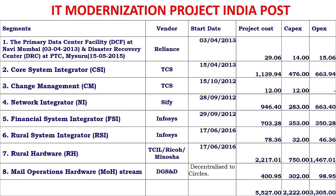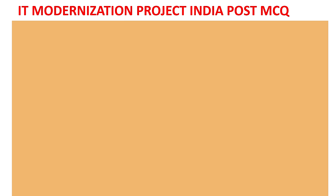The IT modernization project has eight silos. The primary data center is in Navi Mumbai and the disaster recovery center is in PTC Mysore. The core system integrator vendor is TCS, data center facility (DCF) is Reliance, change management is TCS, network integrator is CV, financial services system integrator (FSI) is Infosys, RSI is Infosys, RH is TCIL, and mail operations hardware (MOH) is DGS.